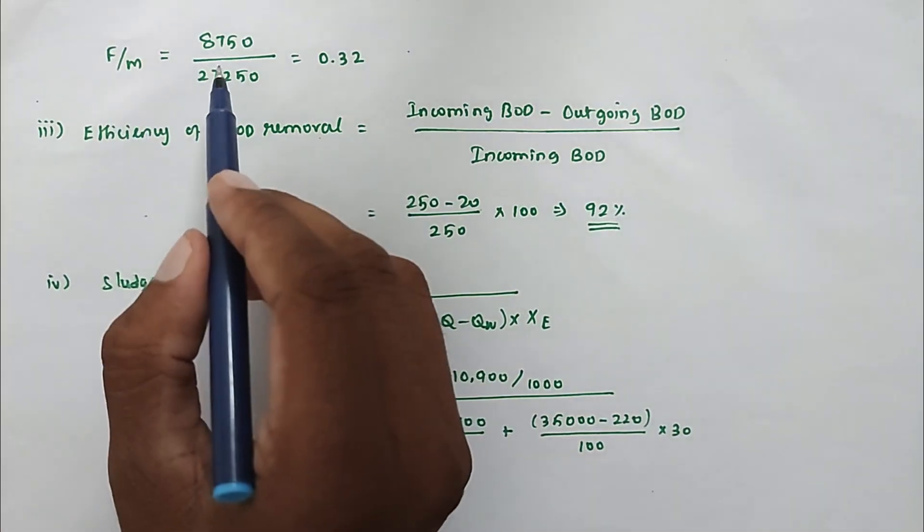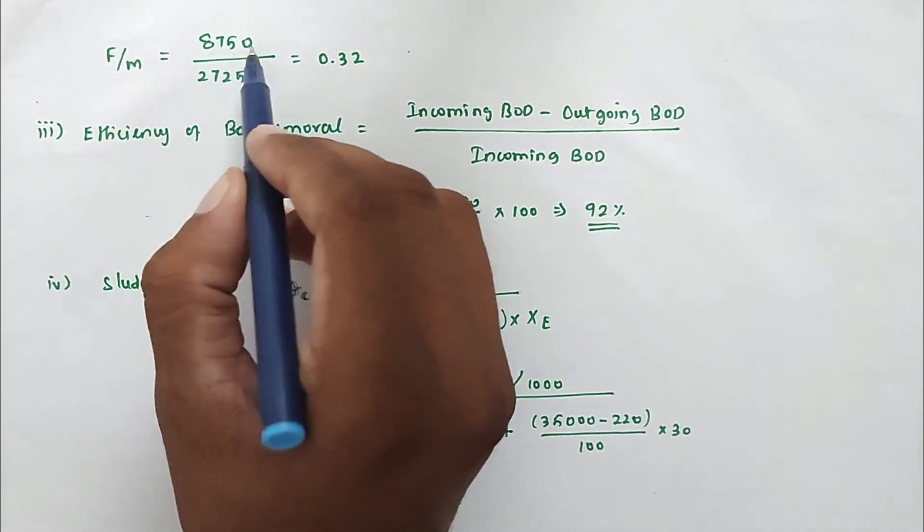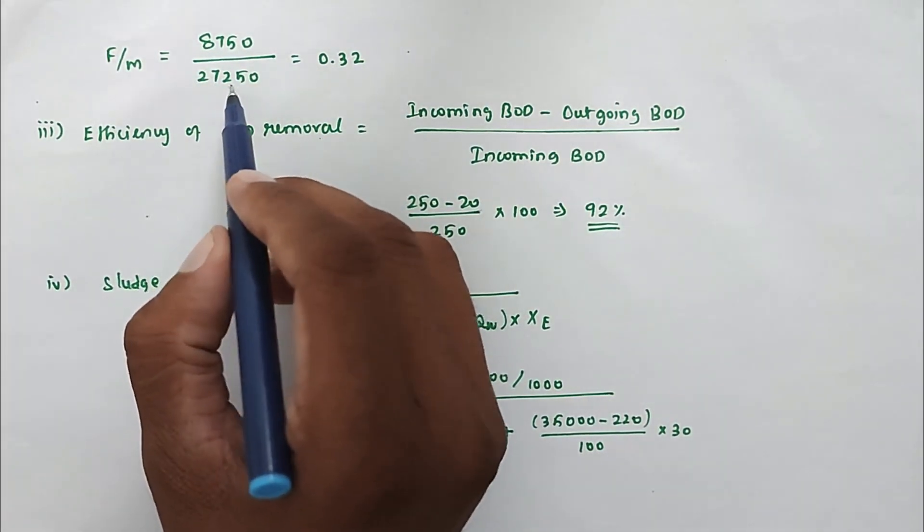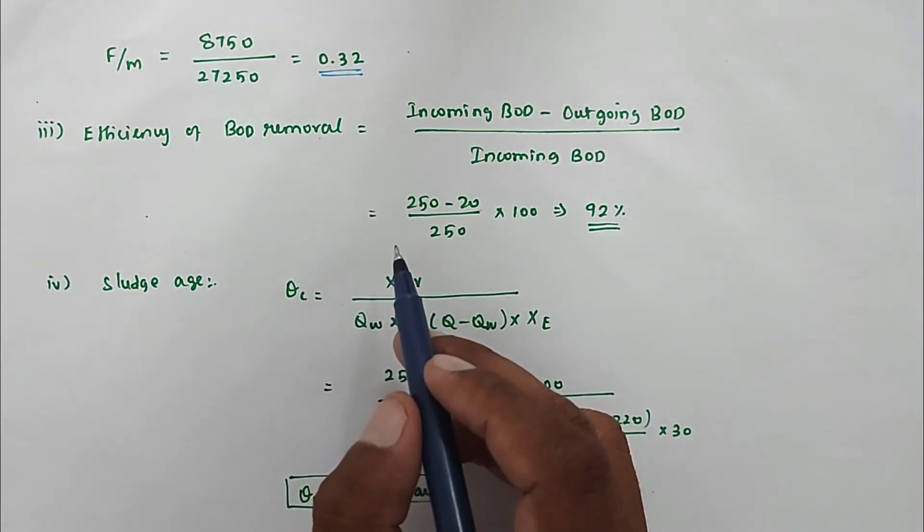Food by microbial ratio: F by M. F we found out is 8750, and M is 27,250. Solving this, we got the value 0.32.